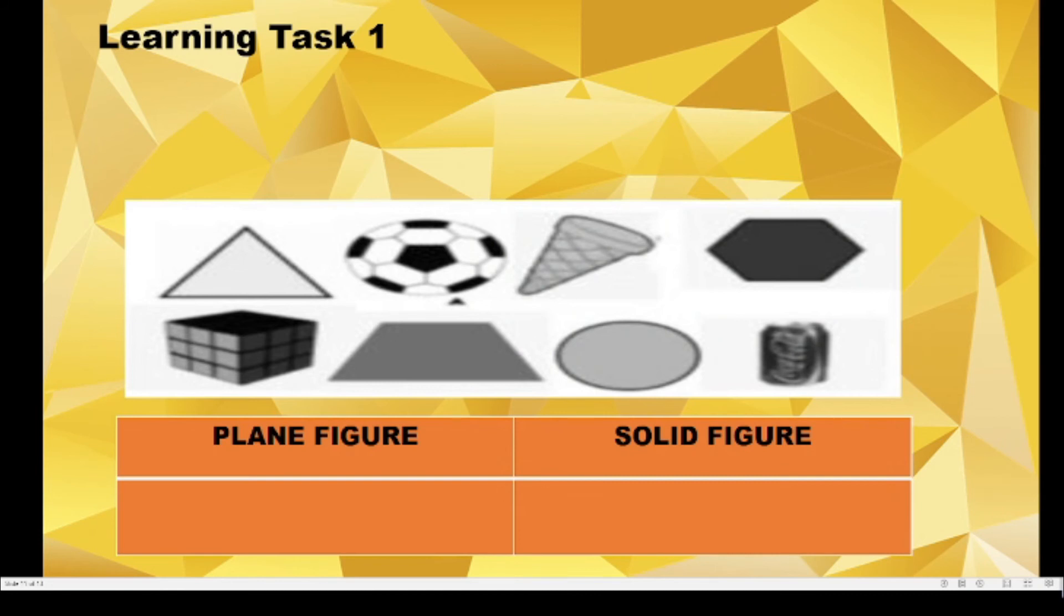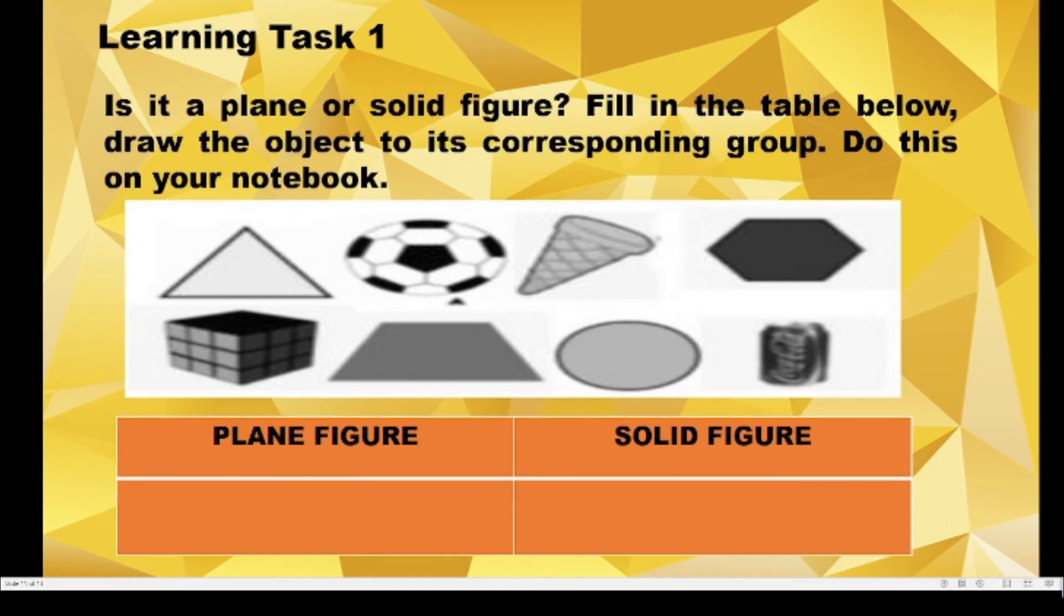For our learning task number one: Is it a plane or solid figure? Fill in the table below. Draw the object to its corresponding group. Do this on your notebook. So we have here two columns. The first column, under plane figures, you will draw all possible plane figures. And the right side, solid figures, you will draw all solid figures in that column.